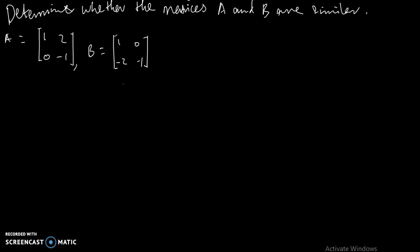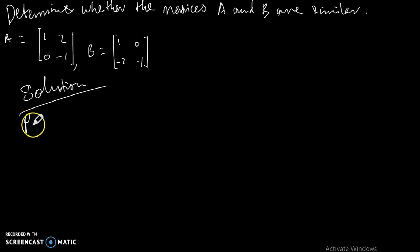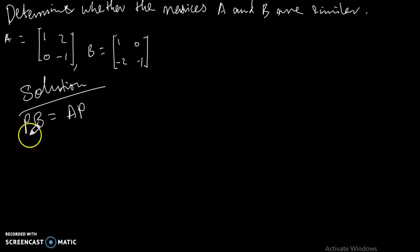By definition, according to what we proved in the previous video, to determine whether the matrices are similar, if A is similar to B then there exists a matrix P such that PB must equal AP.